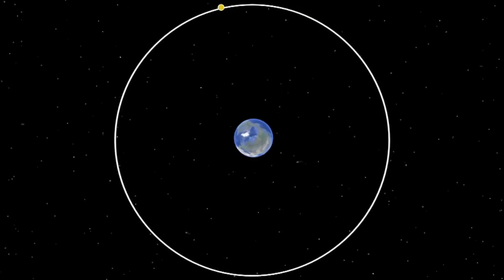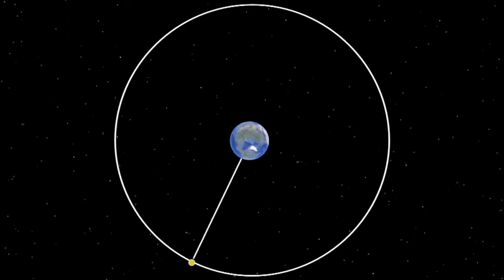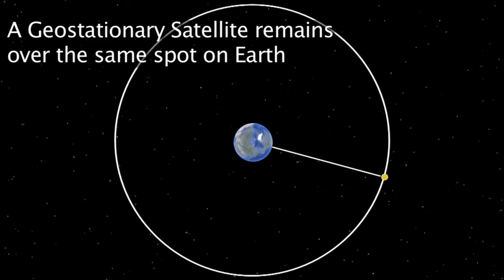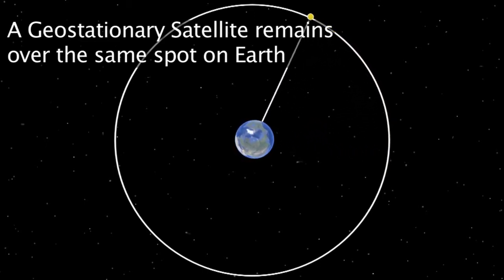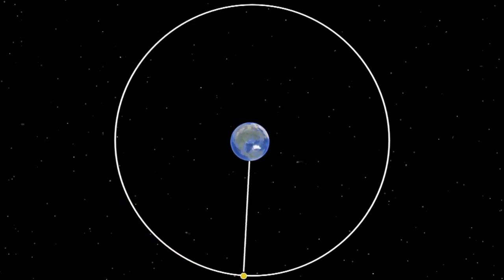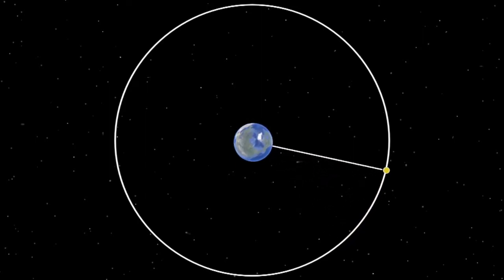Once its desired orbit is reached, the satellite's antennas and solar panels are deployed and its systems are tested. All communication satellites used for television and radio are in geostationary orbits. This means they remain above the same spot on the Earth as it rotates. Other satellites are in what is called geosynchronous orbit, which means that they revolve around the Earth at the same rate as the Earth, but not necessarily over the same spot.